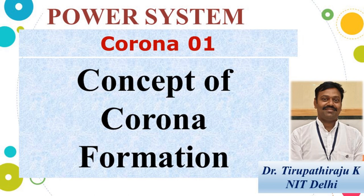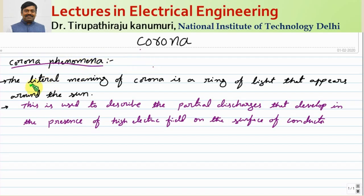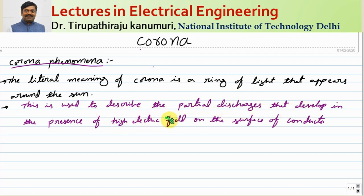Today we are going to discuss the corona phenomena. The literal meaning of corona is a ring of light that appears around the sun. We use this term to describe the partial discharge that develops in the presence of a high dielectric field on the surface of a conductor.